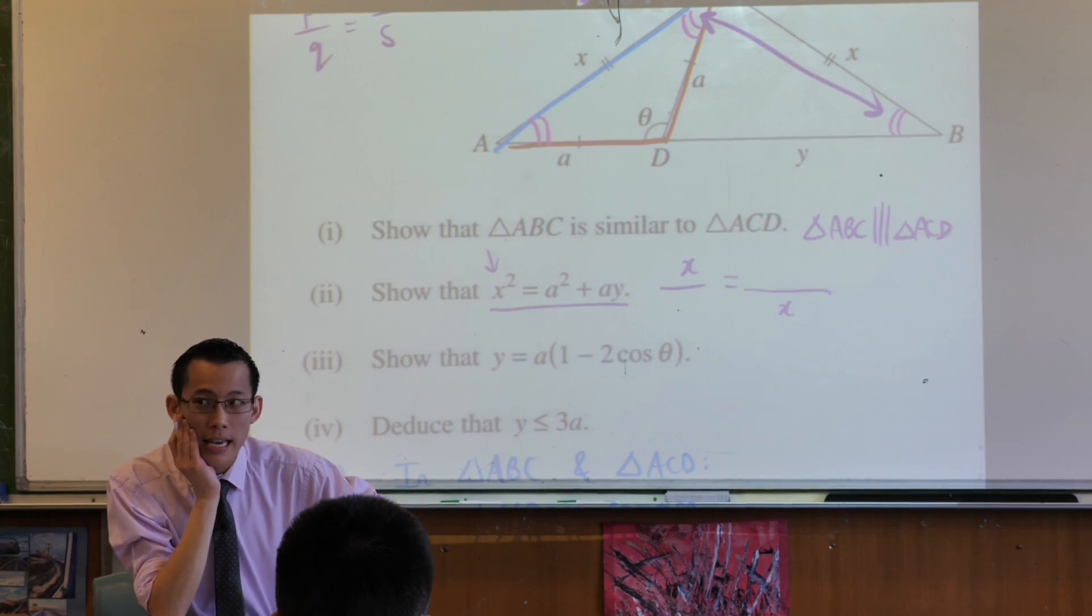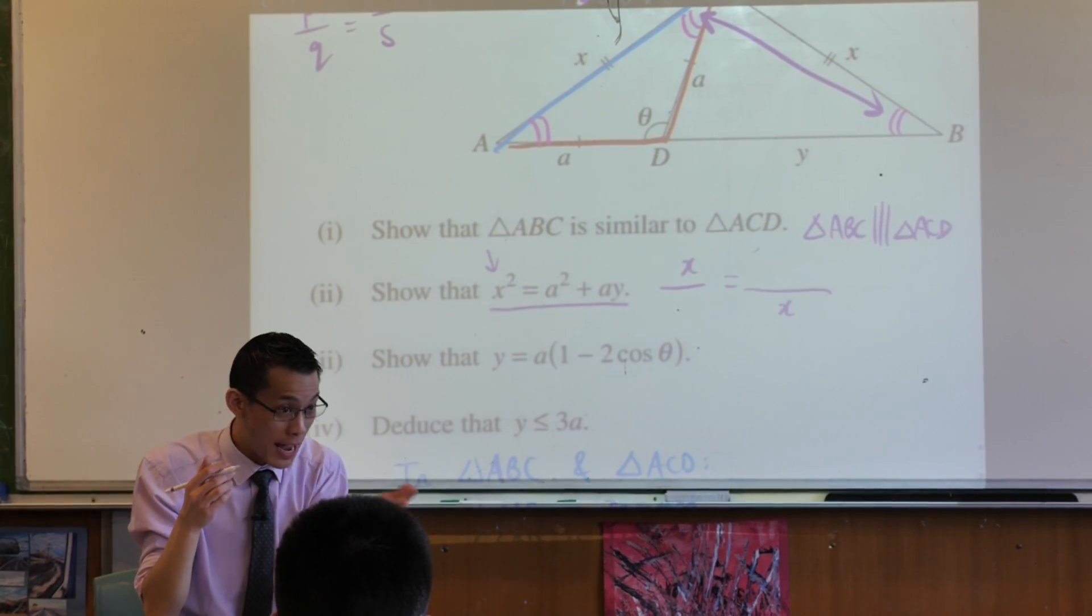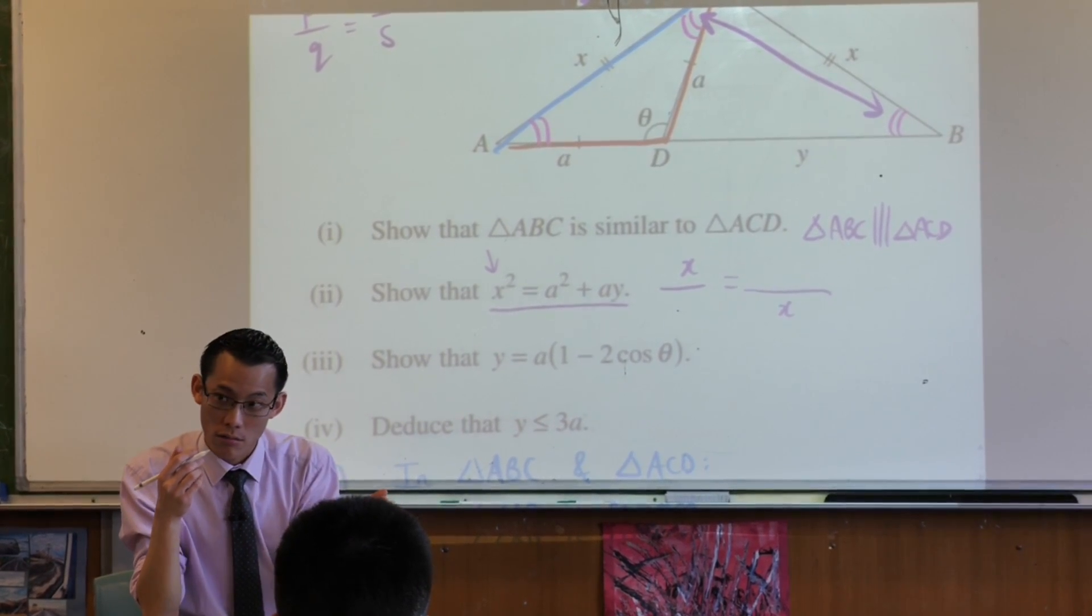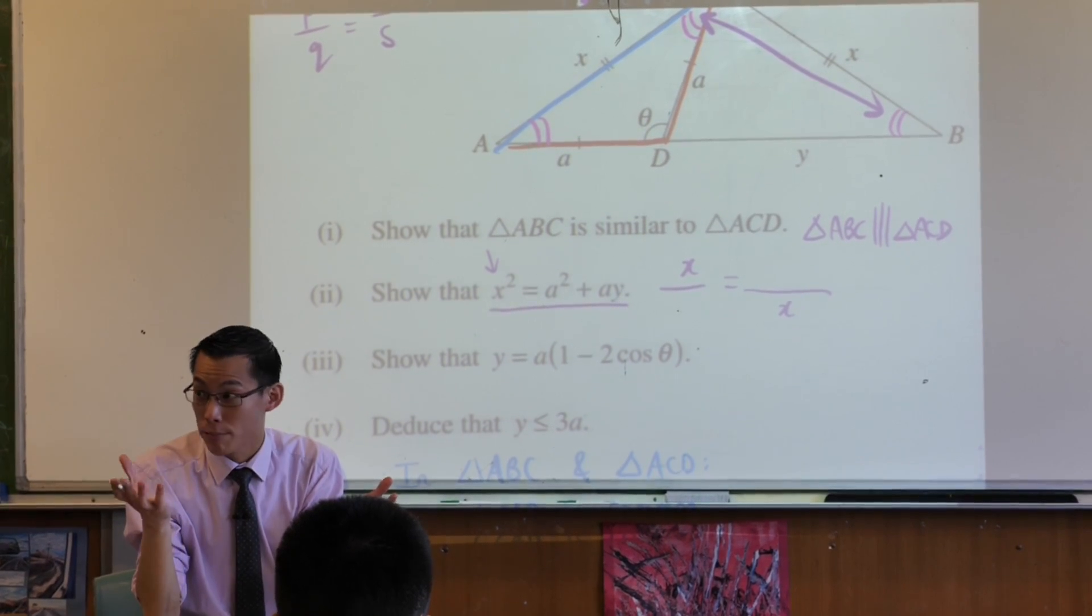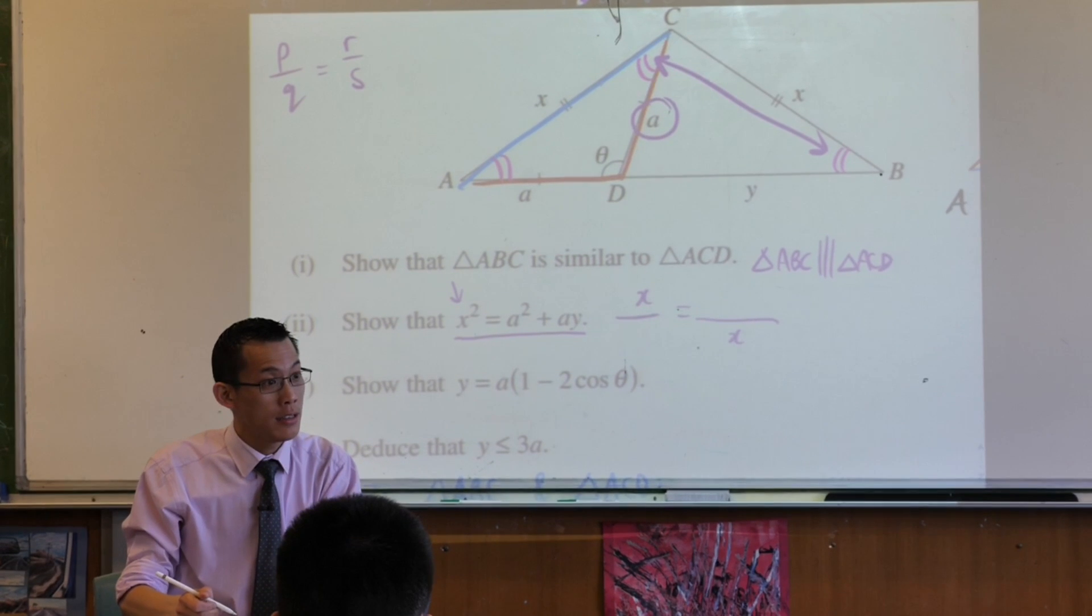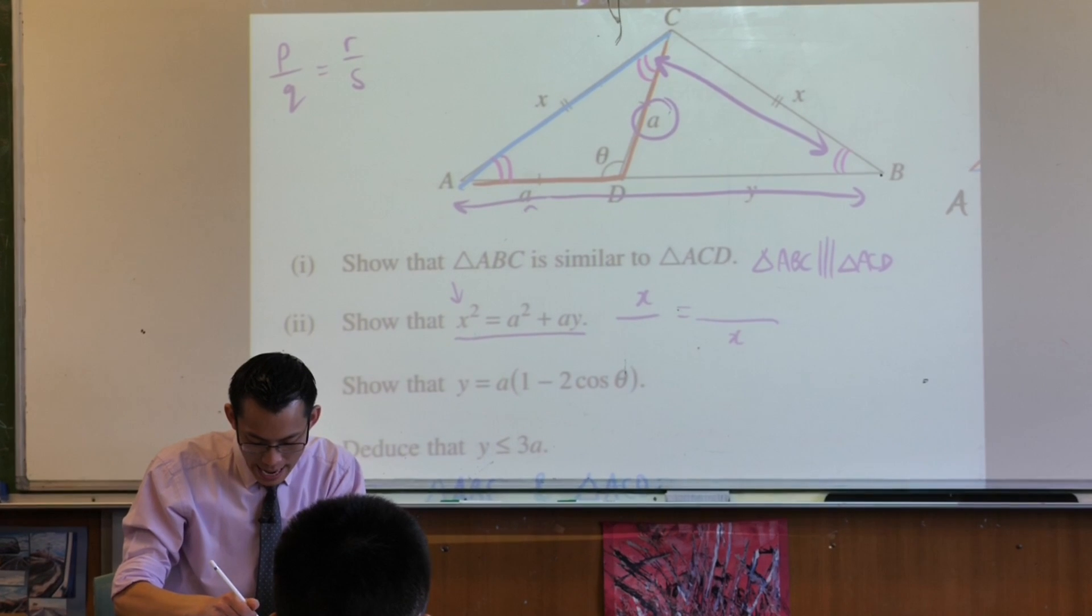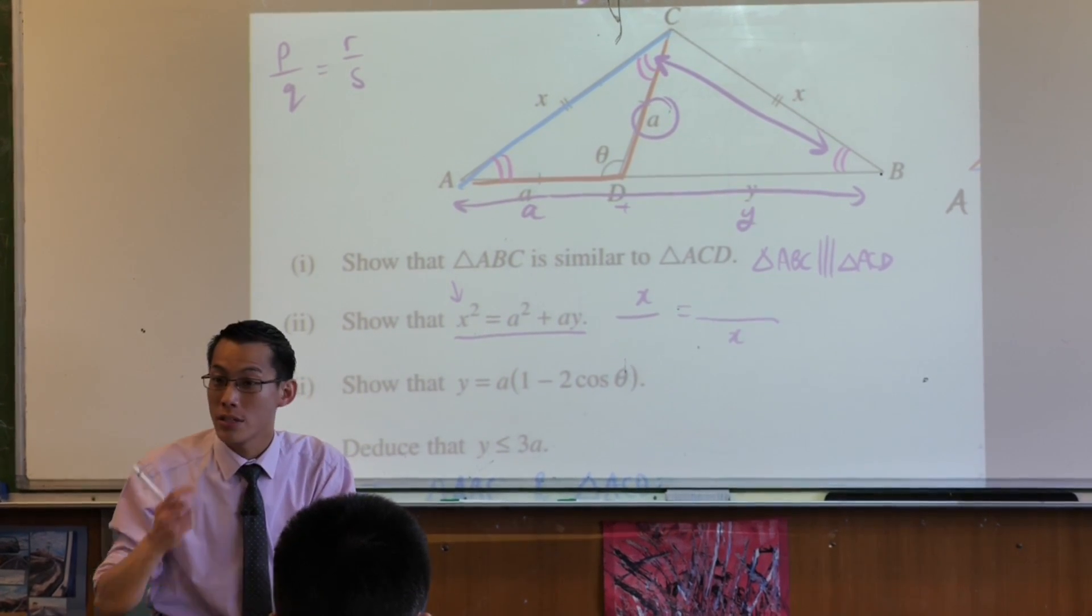In the same way, what do you think a squared plus ay comes from? What are the two bits that have gone together? You've got a and then you've got a plus y, right? You need both of those. And look, here's a, there he is. And here is a plus y. Can you see that?